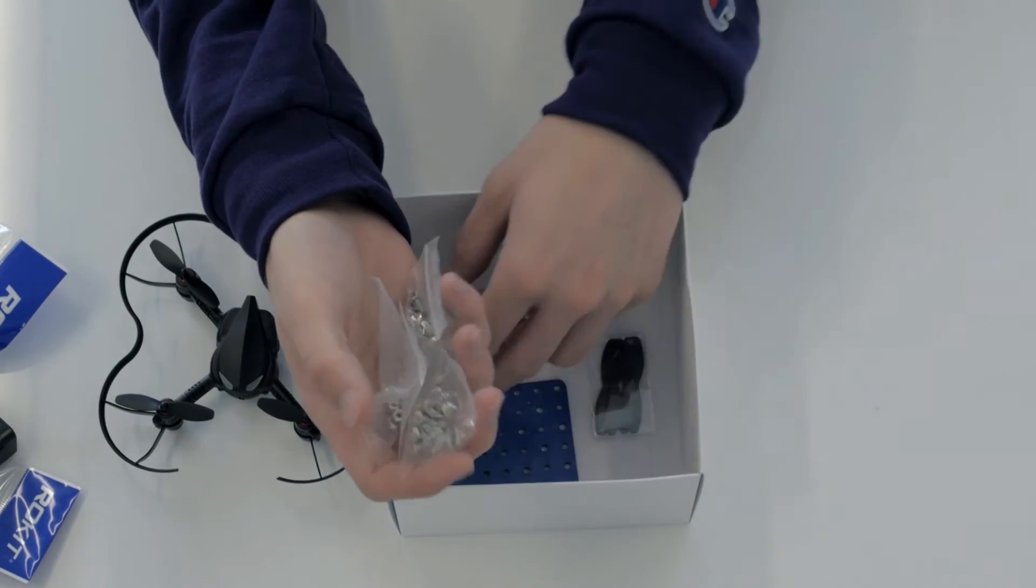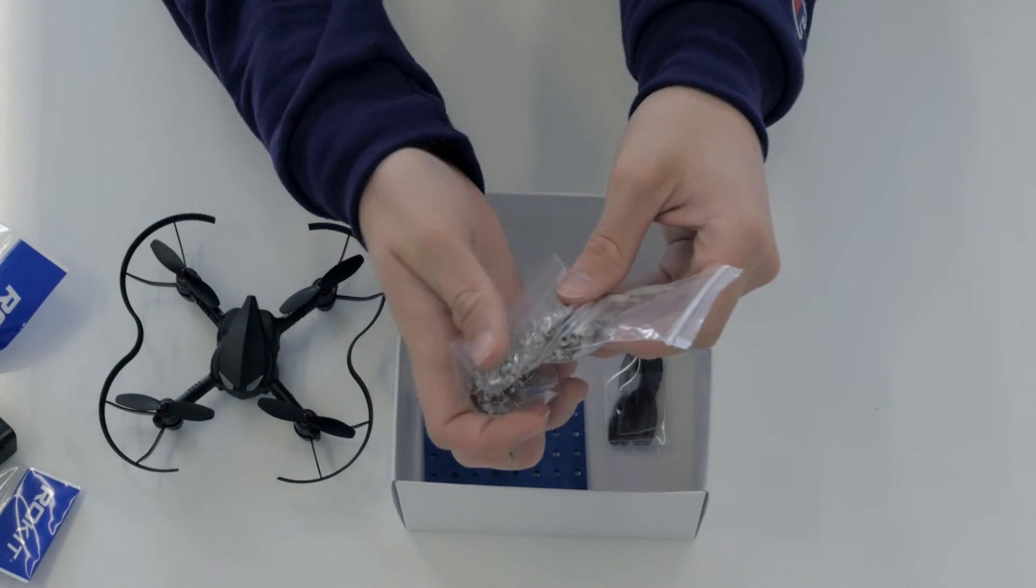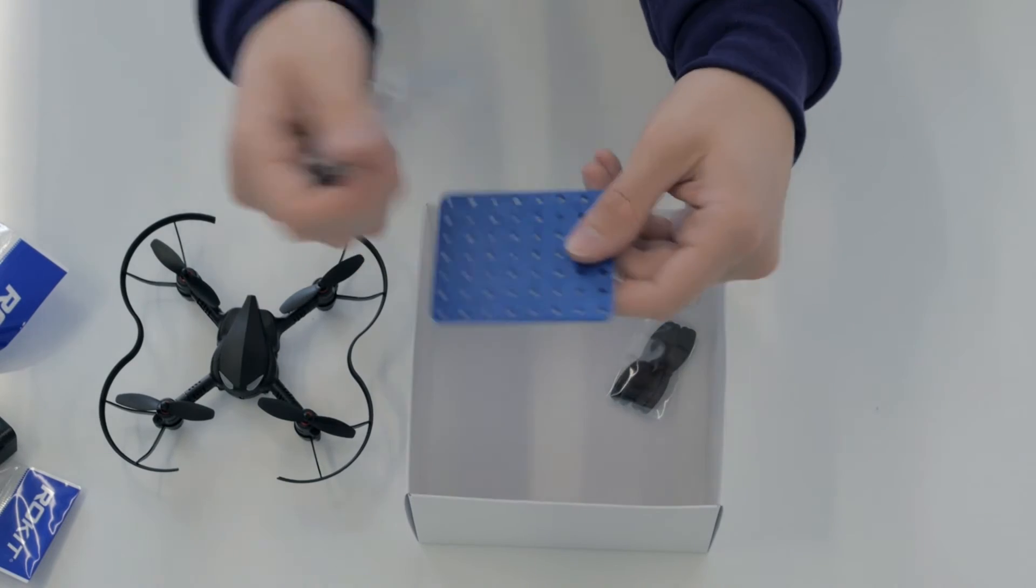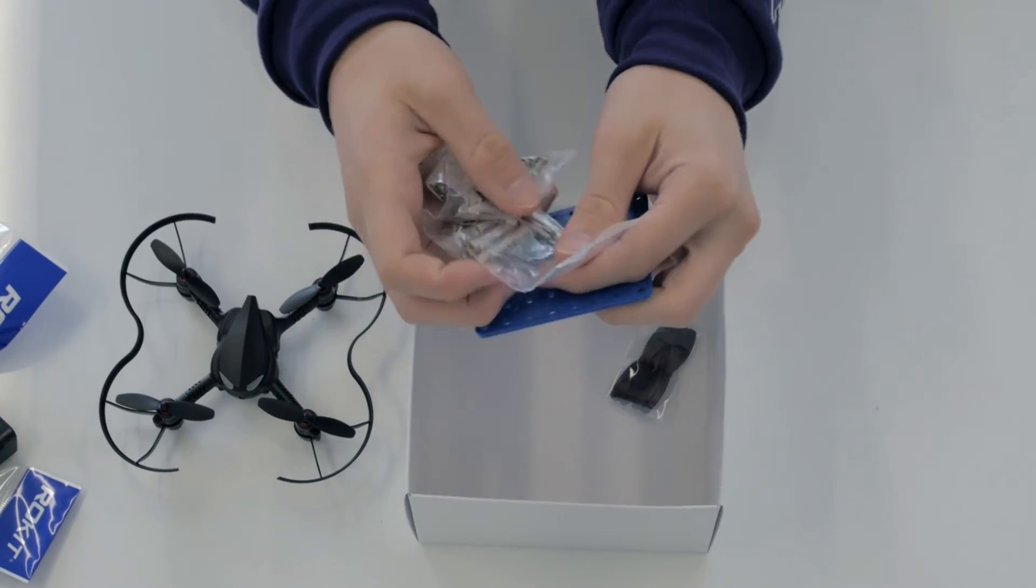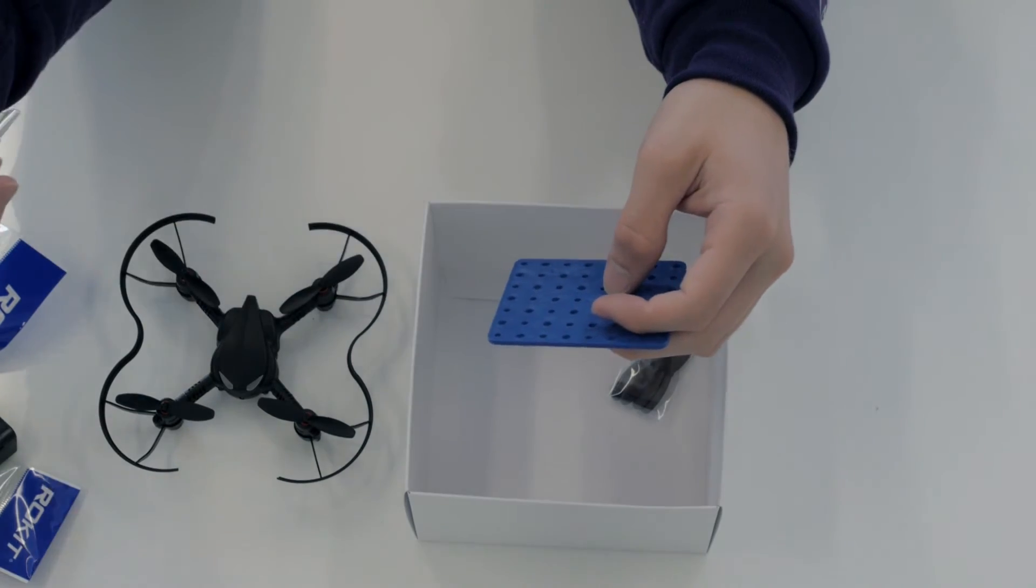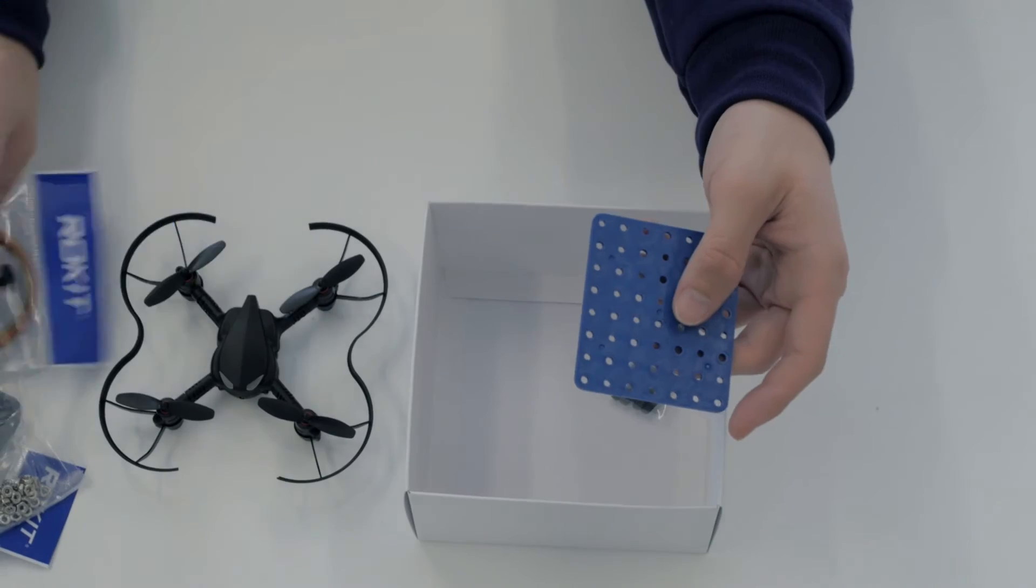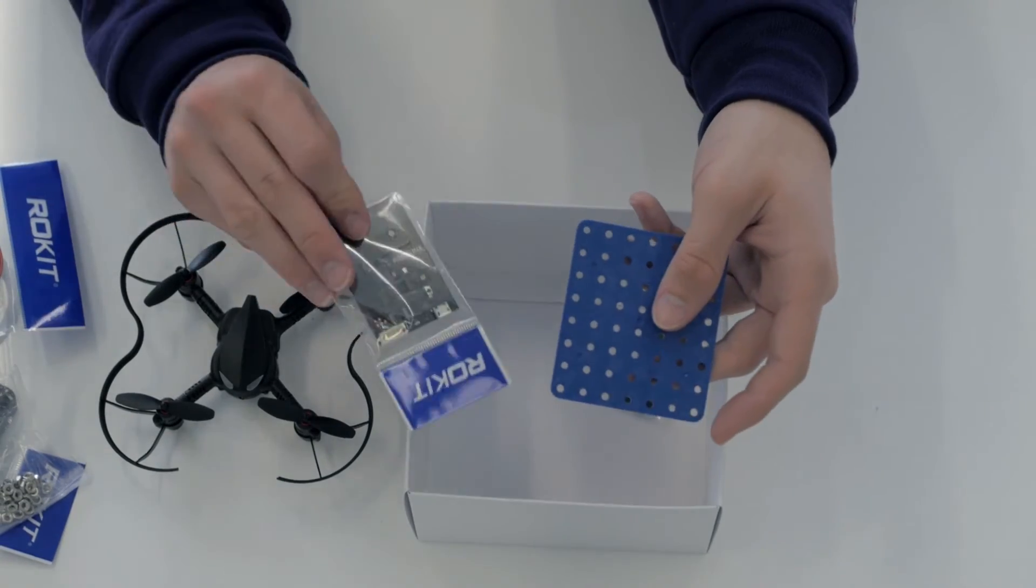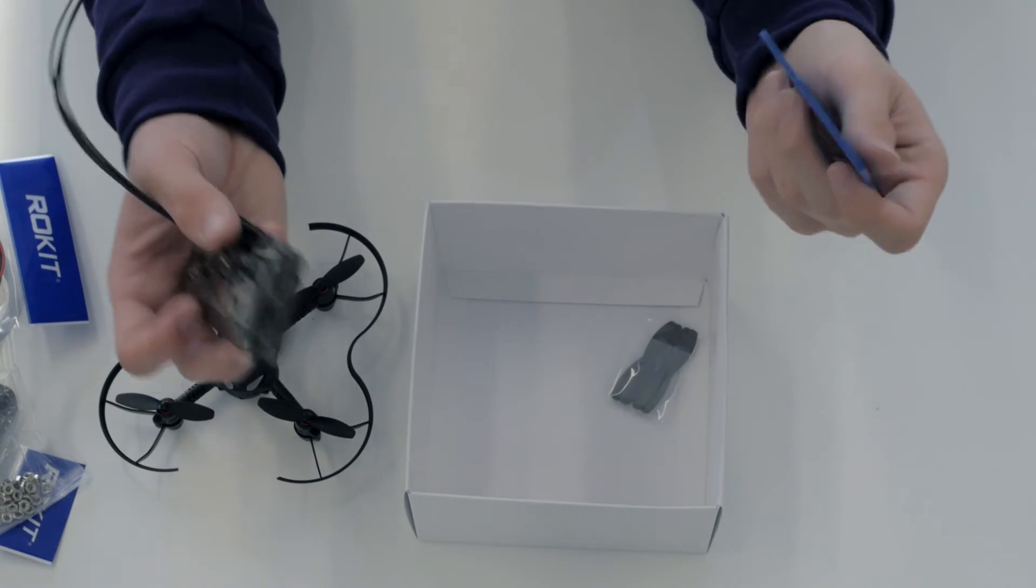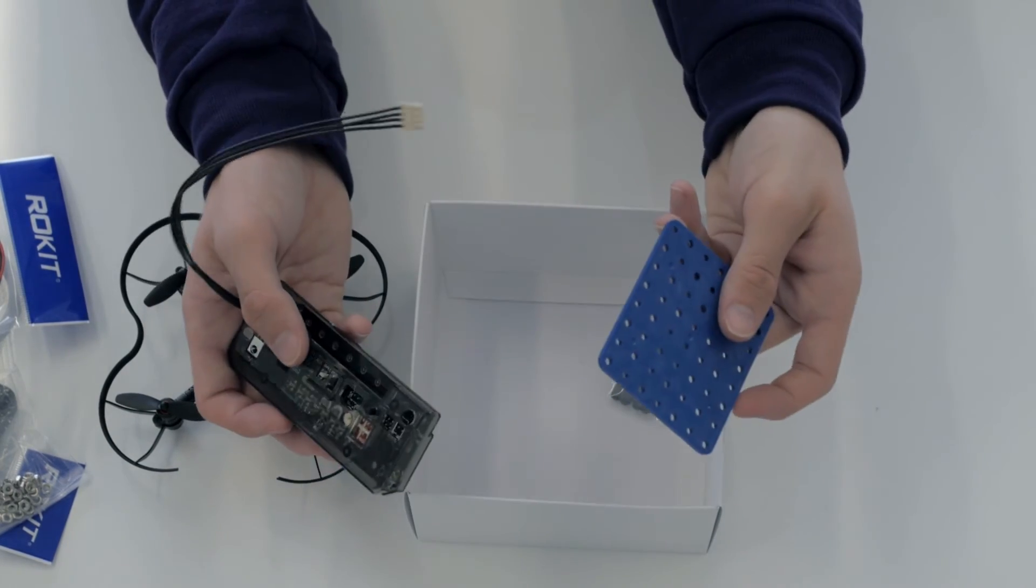You got some various screws and bolts and nuts and stuff. Oh, here we go. You got the blue board. So you can attach stuff to the board. And you have varying heights of bolts here. So that way you can attach your joysticks and your Bluetooth module and stuff at different levels. This is what you'll be attaching the main board to I'm assuming. So that way everything's all in one place.